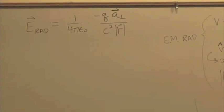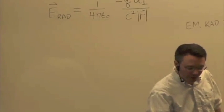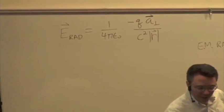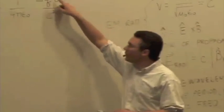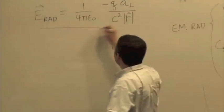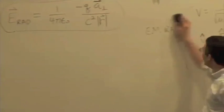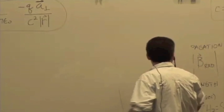So the field is actually going to get smaller with distance. This radiative field is going to go down with distance, but at a lower rate — it drops off with distance only as 1 over r, not 1 over r squared like the Coulomb field. So what we want to think about is how to use this formula to get the direction of the radiative electric field.